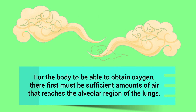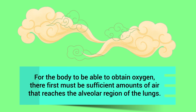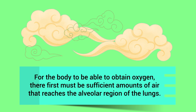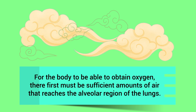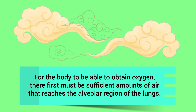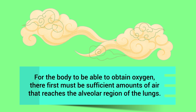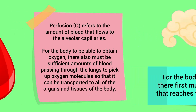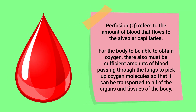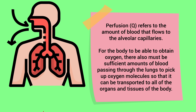For the body to be able to obtain oxygen, there first must be sufficient amounts of air that reaches the alveolar region of the lungs. Perfusion refers to the amount of blood that flows to the alveolar capillaries.